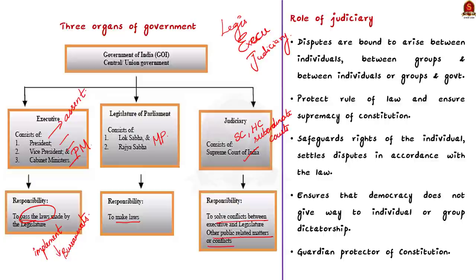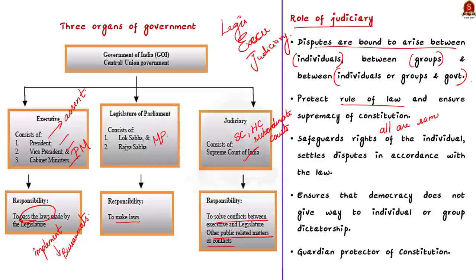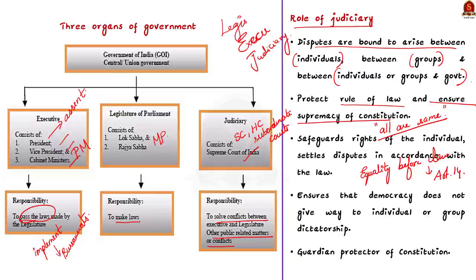Since the article is about judiciary, let us concentrate on its role. In any society, disputes are bound to arise between individuals, between groups, and between individuals and government. All such disputes must be settled by an independent body in accordance with the principle of rule of law. The rule of law implies that all individuals — rich or poor, men or women, forward or backward castes — are subjected to the same law. Equality before law, established by Article 14 of the Indian constitution, is an element of this rule of law. The Supreme Court held that rule of law under Article 14 is considered as basic structure and cannot be changed by amendment.